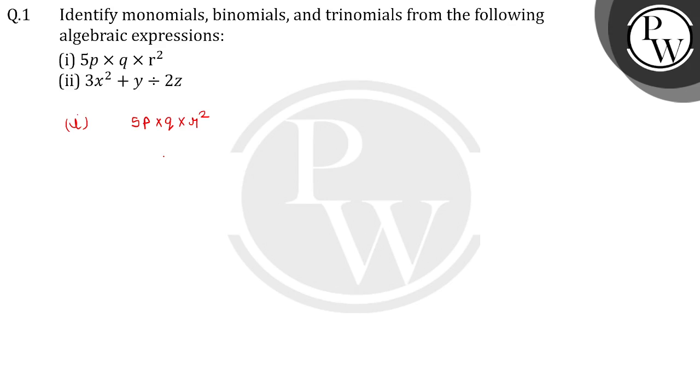If we multiply them, then we will get 5pr square. How many terms have we? Only one term. One term means polynomial. Okay?